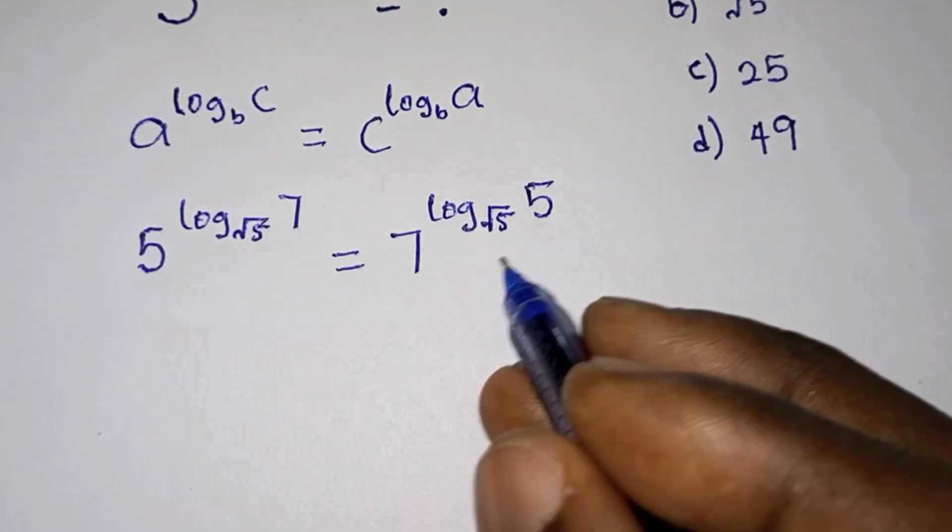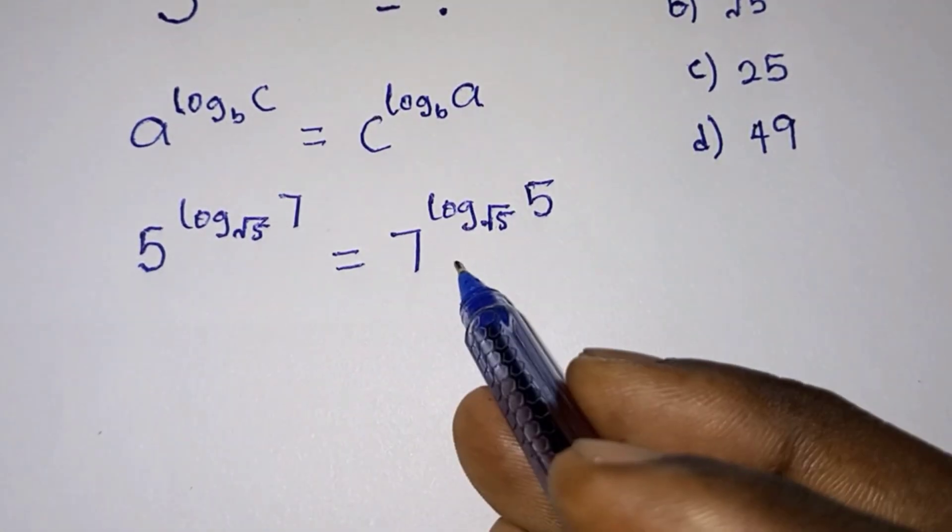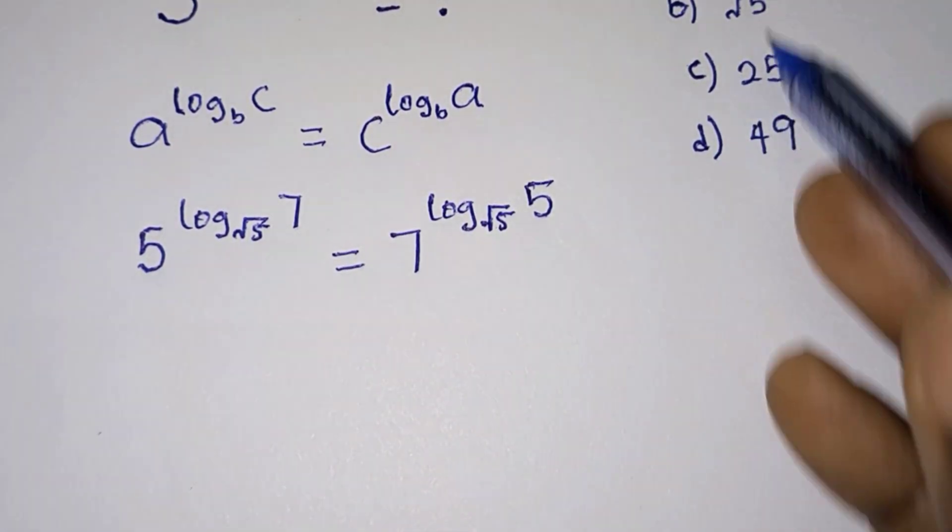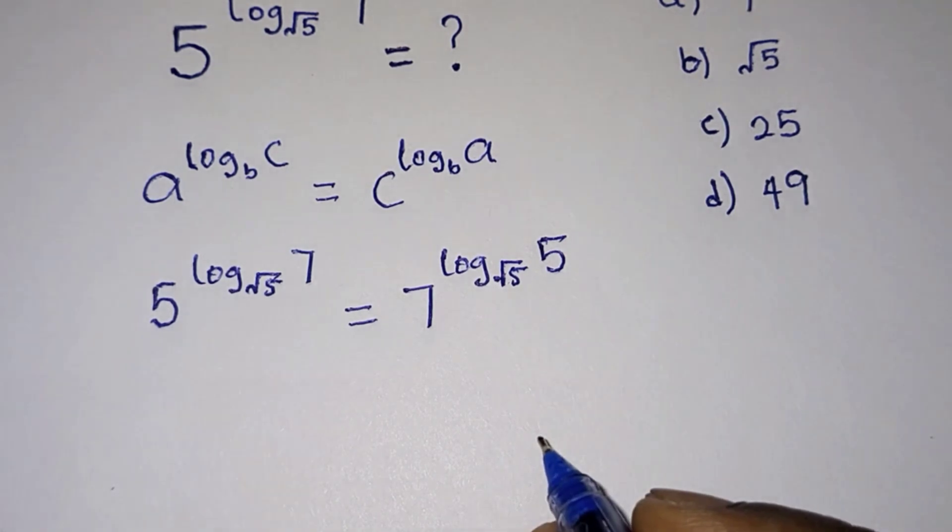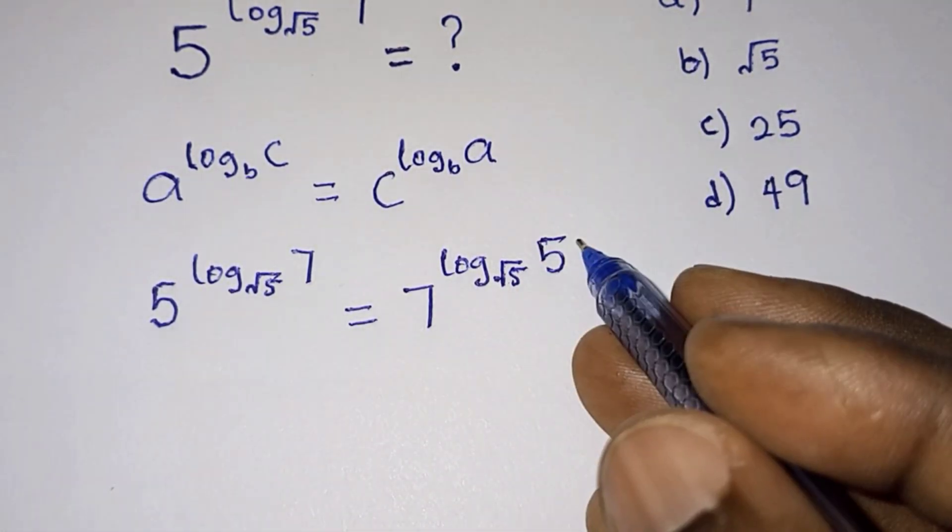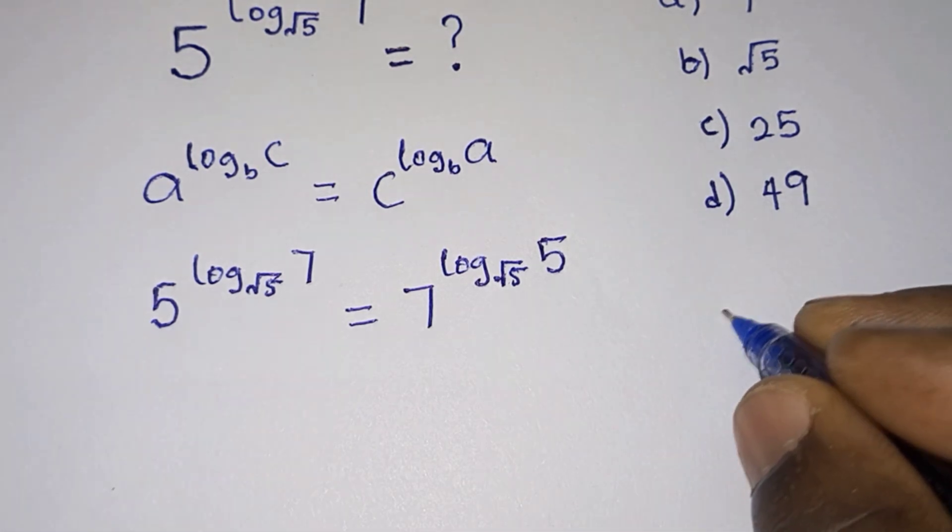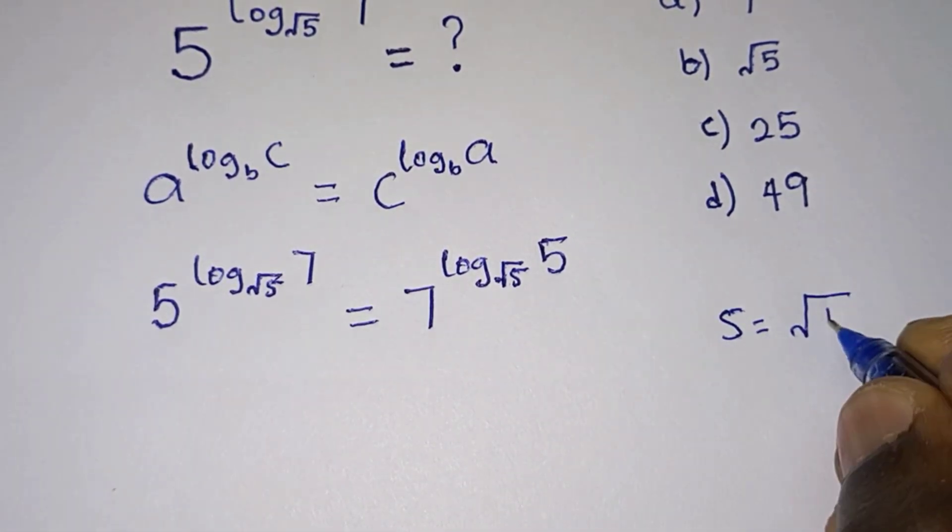Now that we have this, we are done using this rule. But this option is not found in the options, right? So what we're going to do is rewrite this 5 in a different form. We know that 5 is the same as square root of 5 squared.